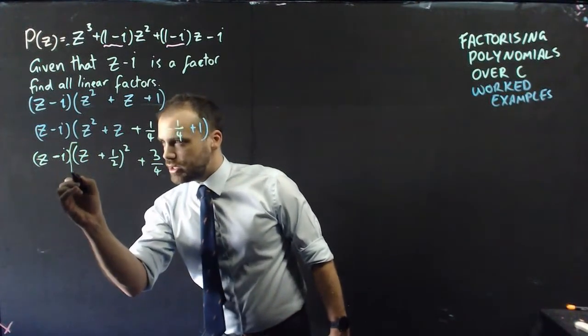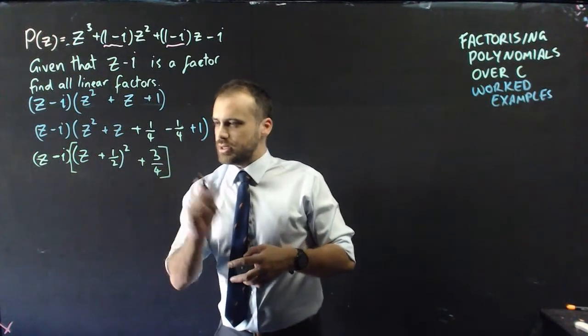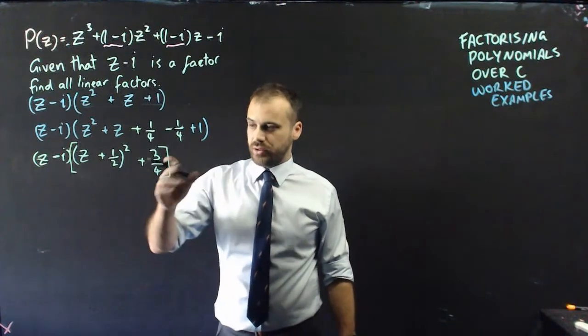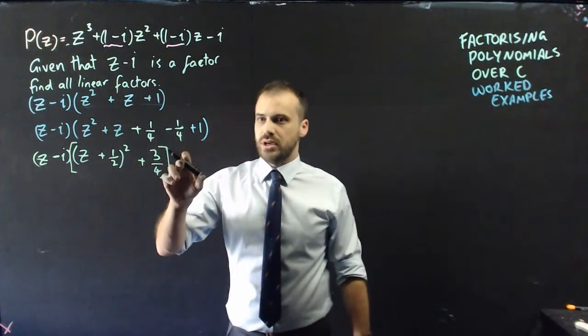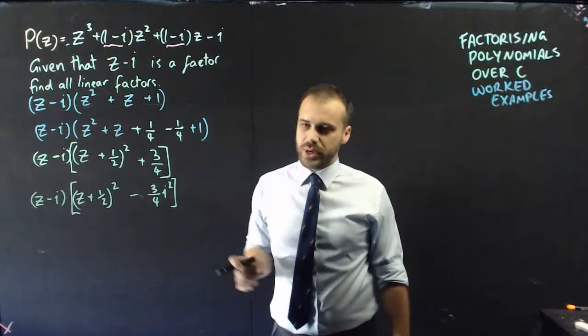But, you need to be really careful, because this whole thing was in brackets, which means this bit is in brackets. Now, I can write 3 quarters as a square. I can write it as negative 3 quarters i squared. And, now, I have this, the difference of 2 squares.